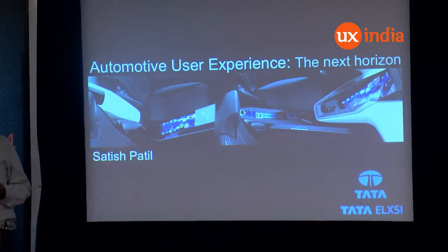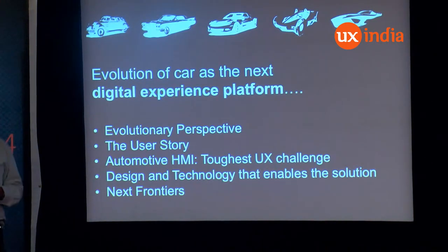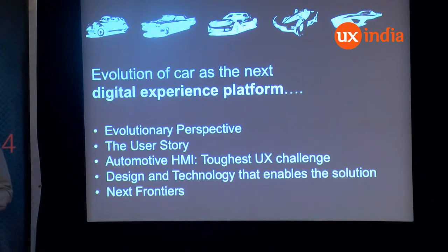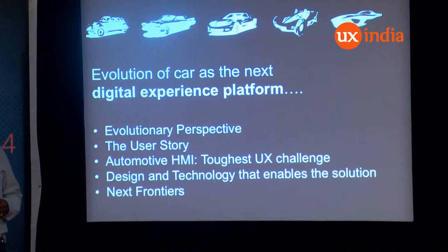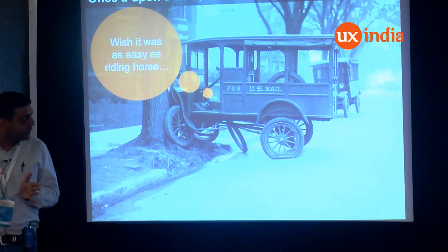Let's look at what we're going to cover in this session very briefly. We are going to talk about an evolutionary perspective in terms of how cars and the interfaces in cars have evolved. We're going to talk about real user stories, user perspectives, why it is so challenging to deal with automotive infotainment, and of course how technology is shaping automotive infotainment as we go along.